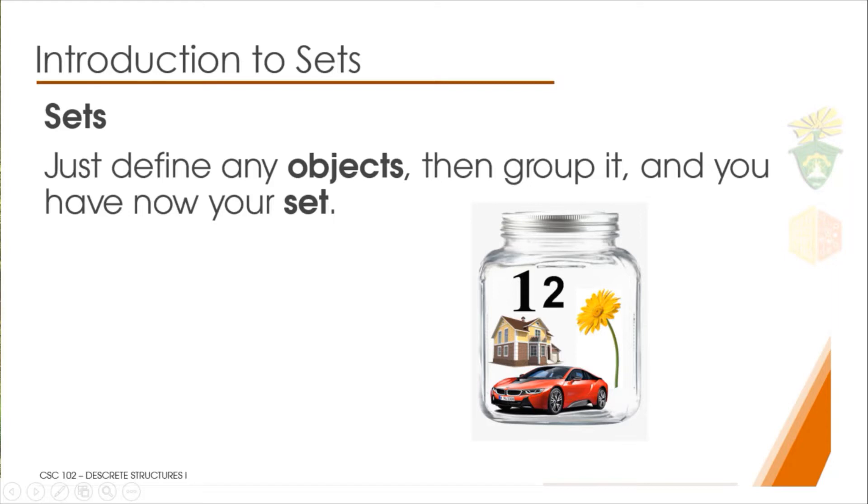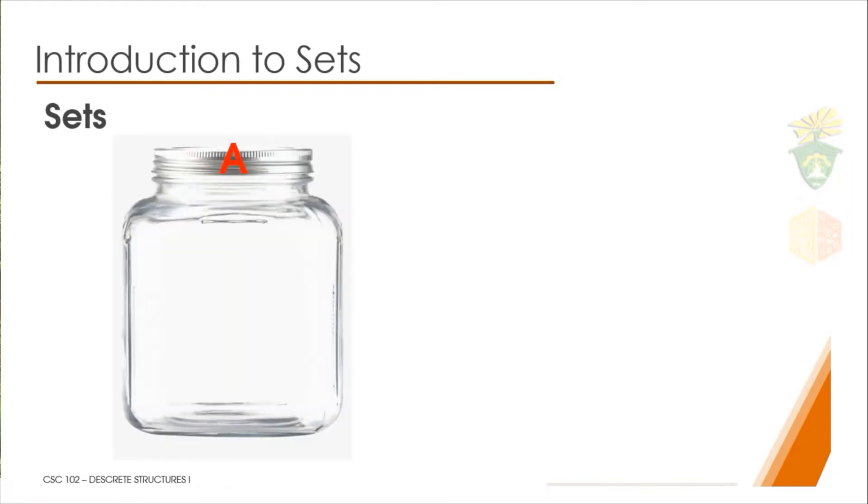For a further and concrete example, assume that we have a container. This container is called A, the name of this set. For example, we put some objects inside container A. We put shapes such as circles, triangle, square, and rectangle. The objects we put in this container A are now the elements of the set.